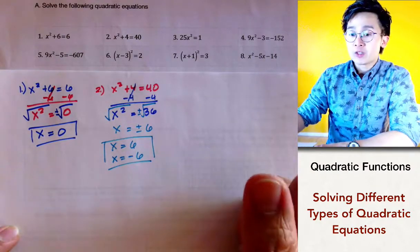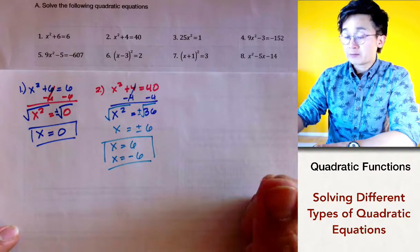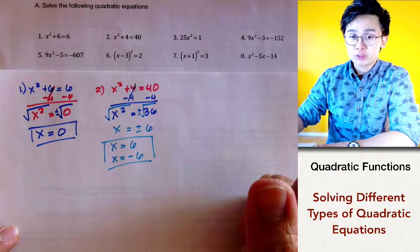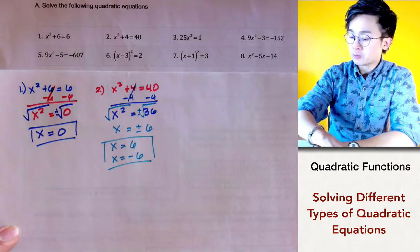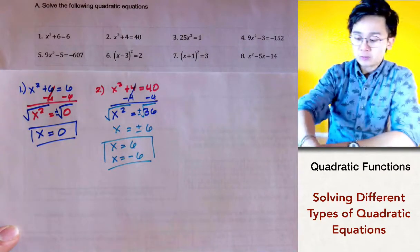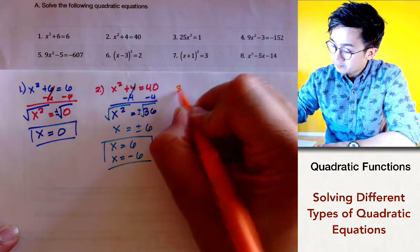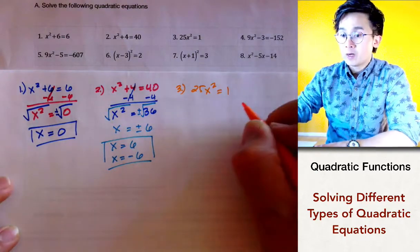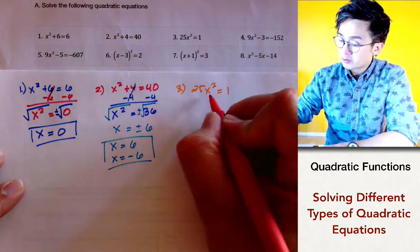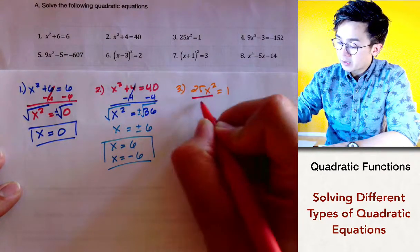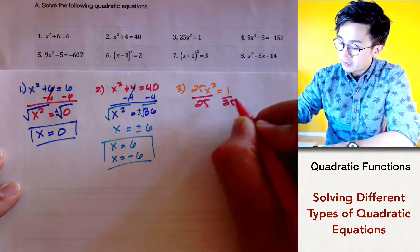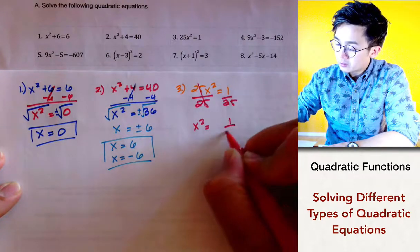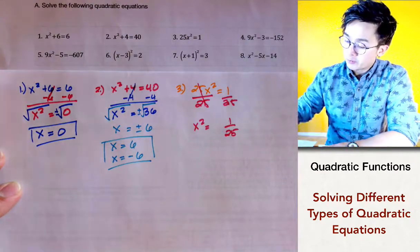Notice that every time we solve a quadratic equation, we usually have two solutions, because the maximum number of solutions for any quadratic equation is 2. For problem number three, we have 25x squared equal to 1. We'll get rid of 25 by dividing both sides by 25, giving us x squared equals 1 over 25. Taking the square root of both sides...